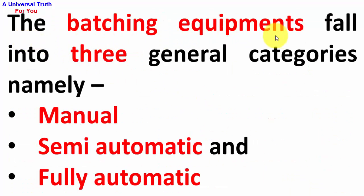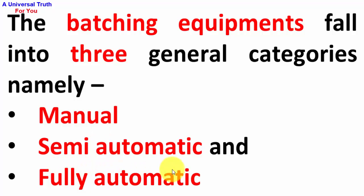Batching equipments fall into three general categories: first is manual, second is semi-automatic, and third is fully automatic.